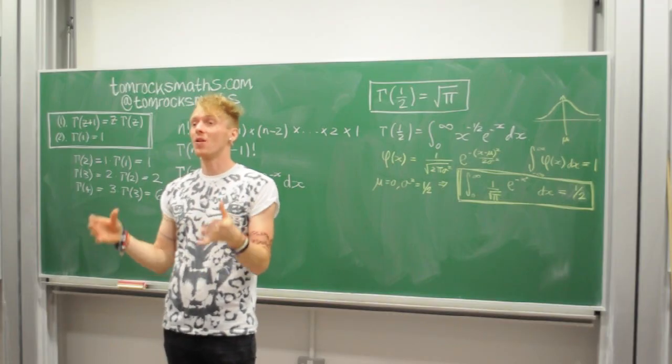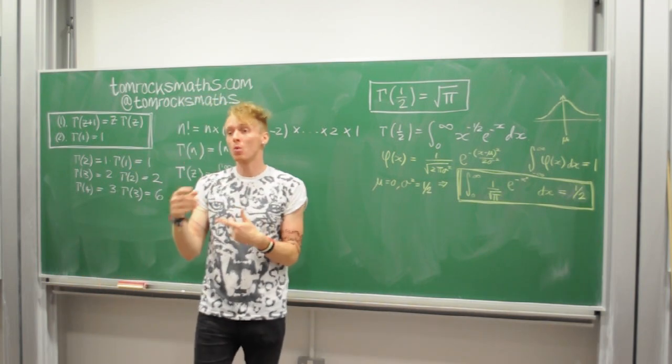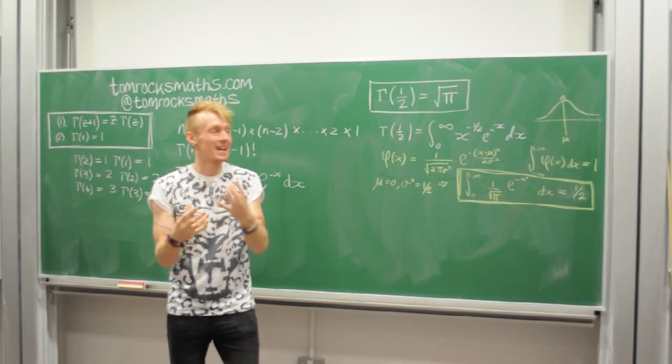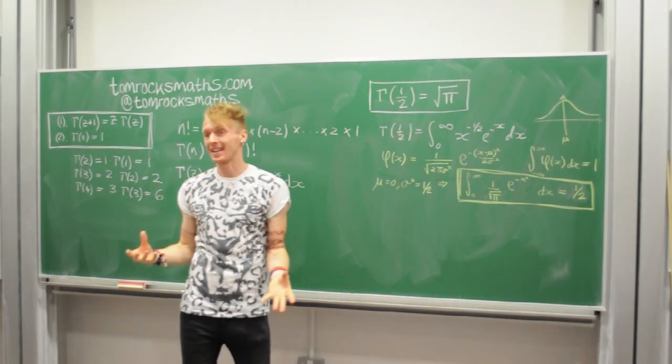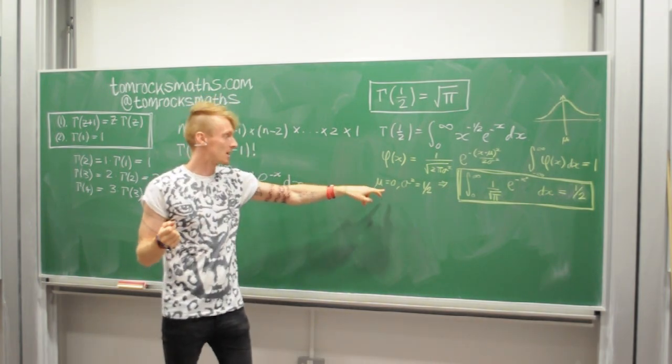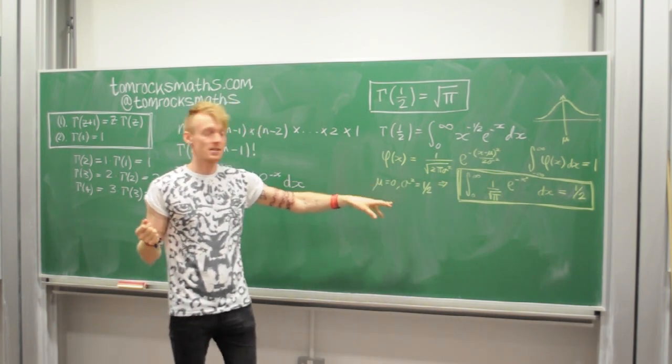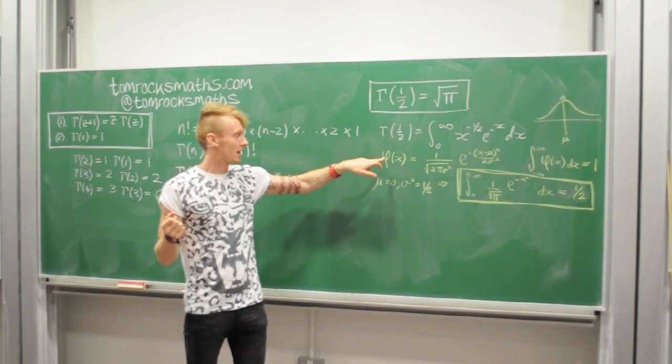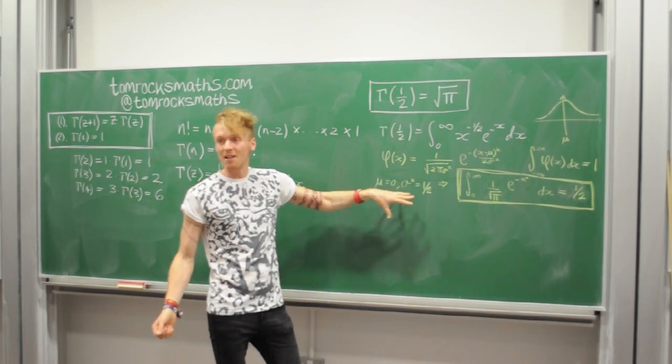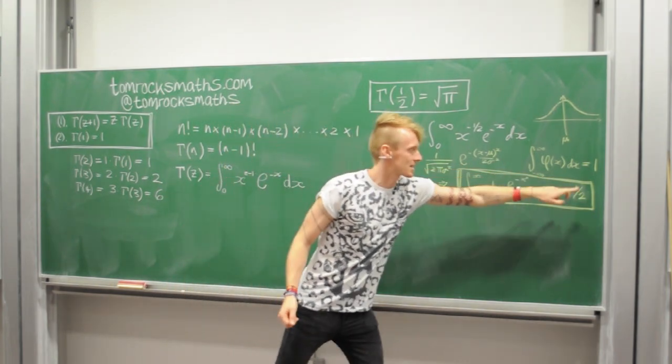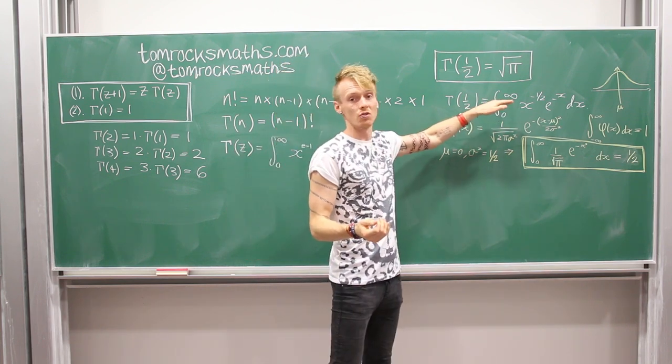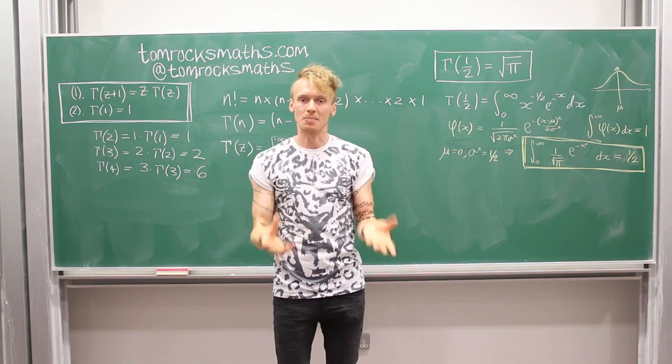Because these properties are true for any normal distribution, we can actually go one step further and pick a particular distribution that best relates to the integral we want to calculate. And in this case, we just set the mean to be zero, so mu is zero, we set the standard deviation to be a half, sigma squared is a half, and substituting for our pdf into the integral equation with these particular values, we get this lovely integral. And all you have to do now to actually calculate this integral using this result is to make a substitution.